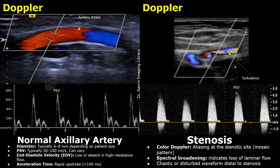Now we will look at spectral Doppler studies of the axillary artery. In the normal case, this is the waveform seen. This sharp peak is the peak systolic velocity, the PSV. Normally it is between 50 and 100 cm per second, however this can vary due to the patient's body habitus, cardiac output, and arm position. Here the PSV is approximately 70 cm per second.